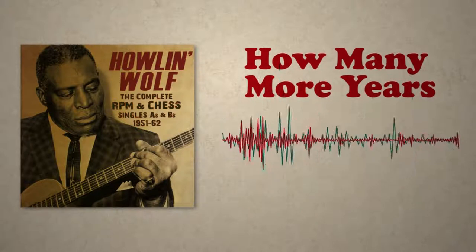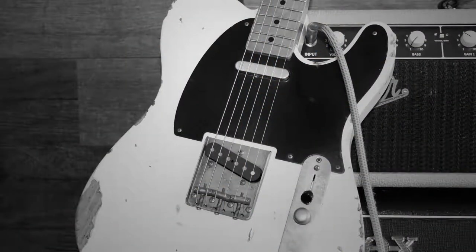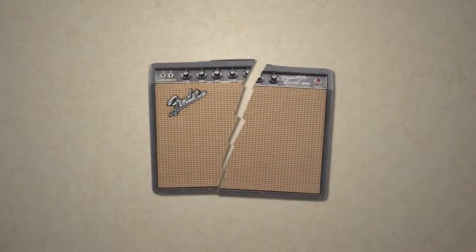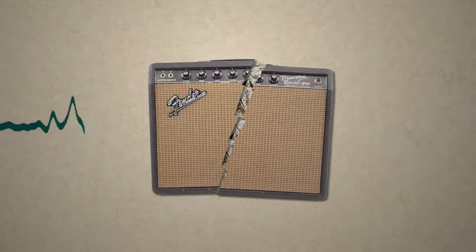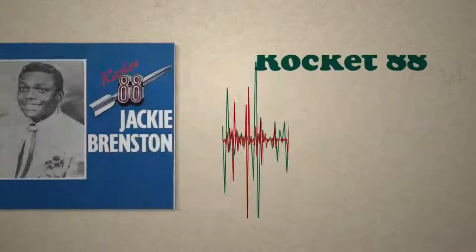Earlier in 1951, Jackie Brenston and his Delta Cats had released Rocket 88, a song that some qualify as the first rock and roll recording. That song featured Willie Kizart ripping a wicked distorted guitar riff, though legend has it his distortion came by accident. There are conflicting stories as to how, but everyone seems to agree on the basic facts: Kizart's amp got damaged while the band was on the road. To try to fix it, he stuffed balls of newspaper into it, hoping to hold the speaker cone in. The result was unintentional distortion, but producer Sam Phillips loved the sound, and so he leaned into it.